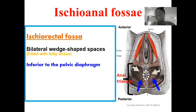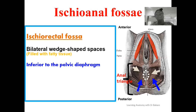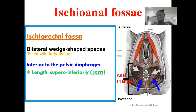The ischioanal fossa is positioned inferior to the pelvic floor or pelvic diaphragm, as seen in this image. In the posteriorly placed anal triangle we can see the pelvic floor because this triangle is less complex. In a standing position, the length of the ischioanal fossa — from the superior pole to the inferior pole — is about five centimeters.